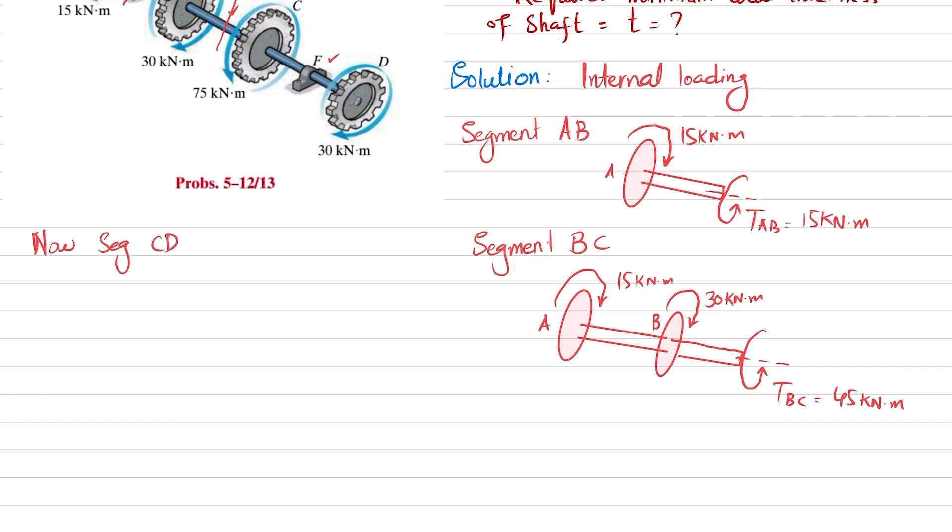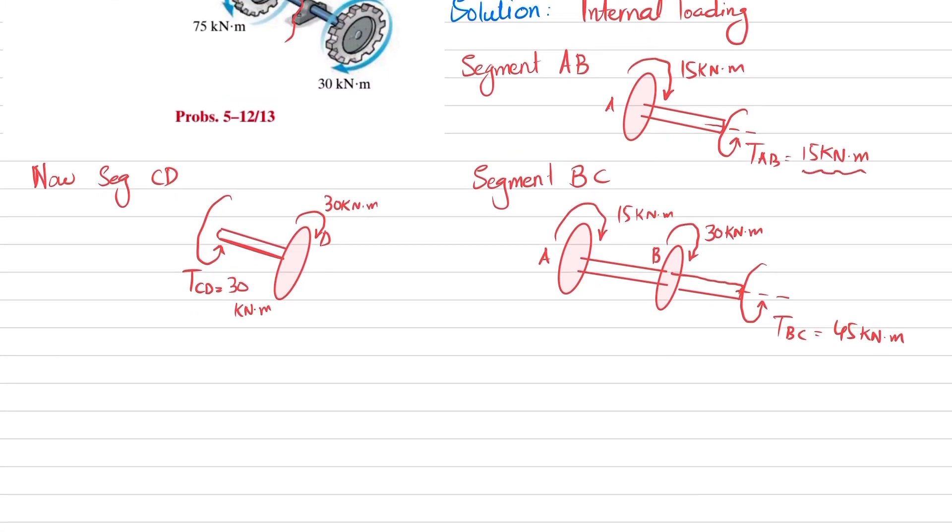Now for segment CD, I have to cut it from here and show you the internal loading. This is your gear D. You can see that you have 30 kilonewton-meter in clockwise direction. For bringing it into equilibrium, you must have TCD equal to 30 kilonewton-meter. Now you can see TAB is 15 kilonewton, TBC is 45, and TCD is 30 kilonewton.